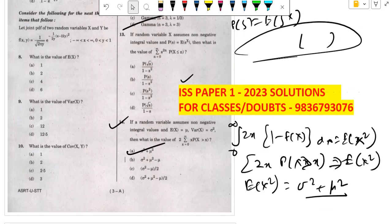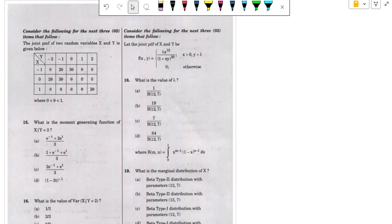For the next one, question 14 is done. Question 15: x, y are given, find the value of the generating function. M_x of this thing, so it is e to the power tx will be there.